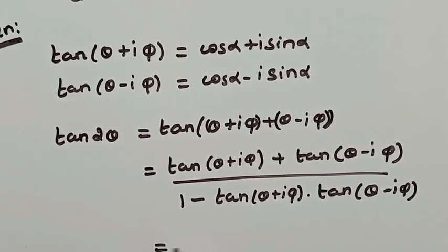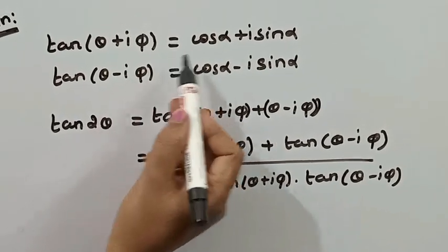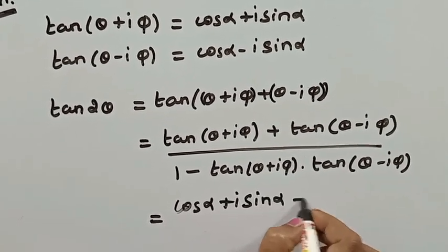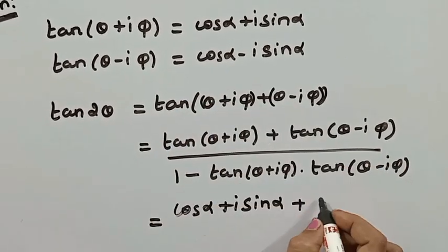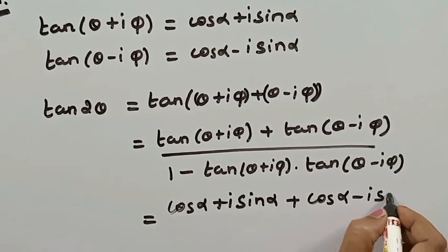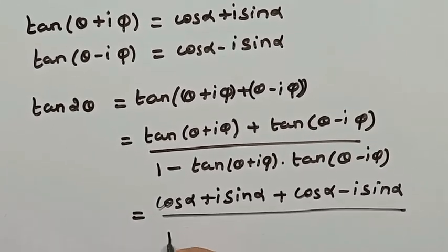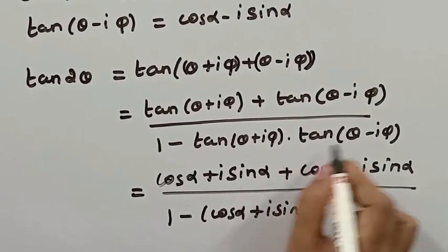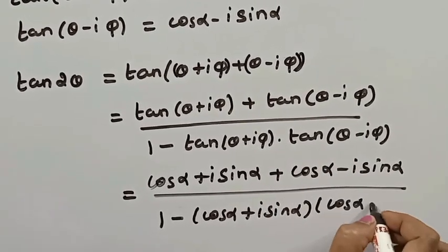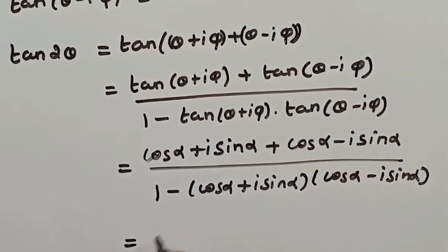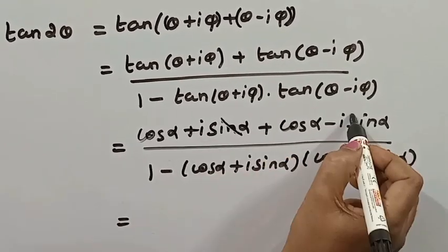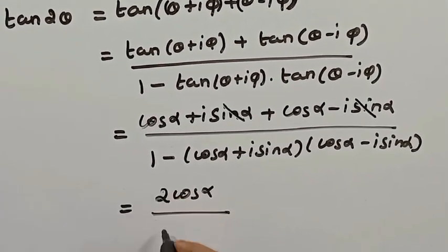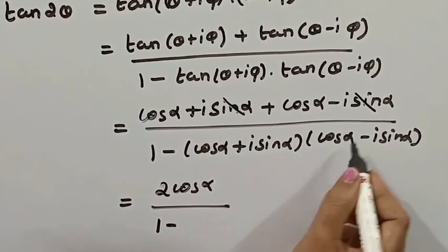We substitute tan(θ + iφ) = cos α + i sin α and tan(θ - iφ) = cos α - i sin α. In the numerator, (cos α + i sin α) + (cos α - i sin α) = 2 cos α. In the denominator, the i sin α terms cancel.